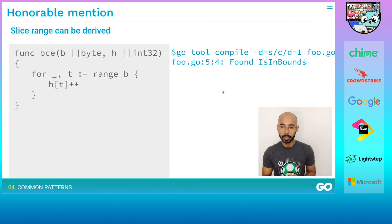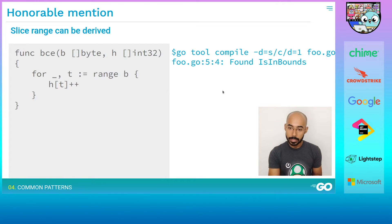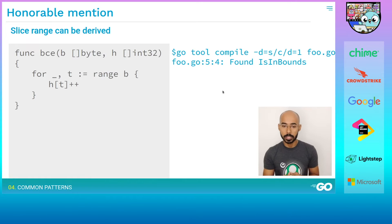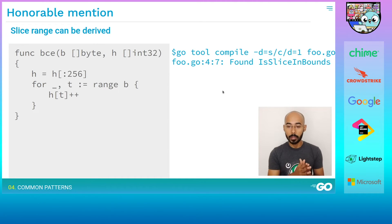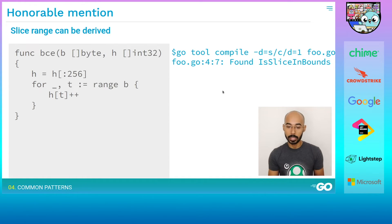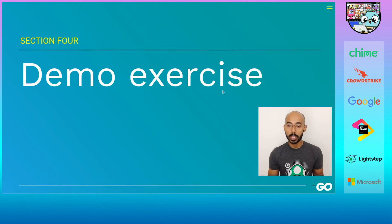Our last pattern is where the slice range can be derived from the type. If the slice is indexed by a byte type, the value of t can only remain within the range of 0 to 255. We can do a reslice operation to get a sub-slice of length 256 and use that. The compiler knows the length of the slice and also knows that t is a byte, so it will always remain within bounds — and therefore it removes the check.